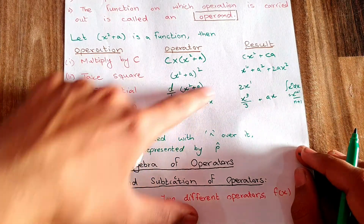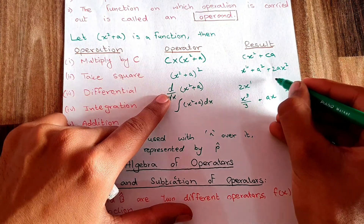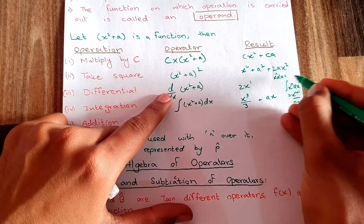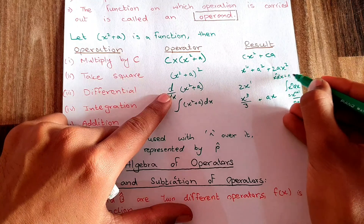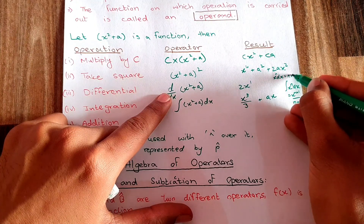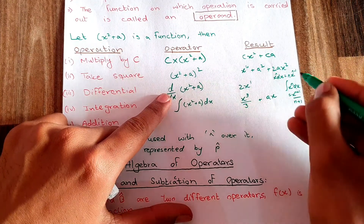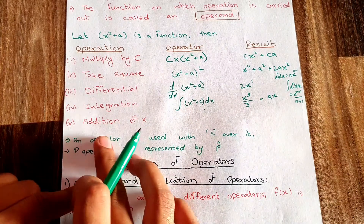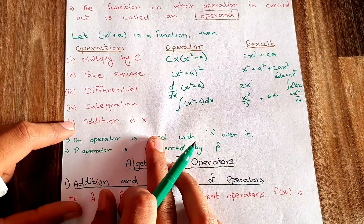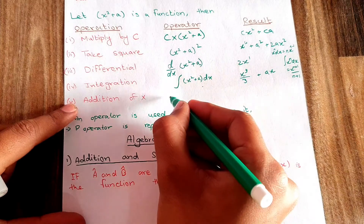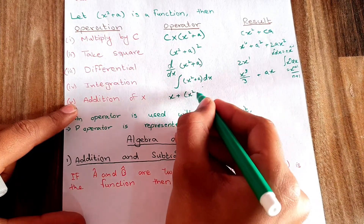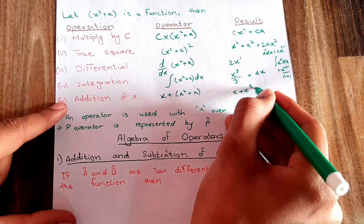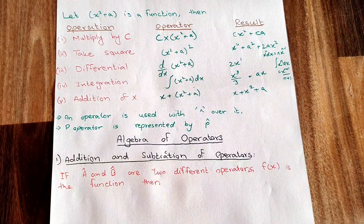For the derivative rule, d/dx of xⁿ equals n times x^(n-1). I have used the derivative formula and the integration formula in the respective examples. The next operation is addition of x, so the operator is plus x. Adding x to the function gives x + x² + a as the result.